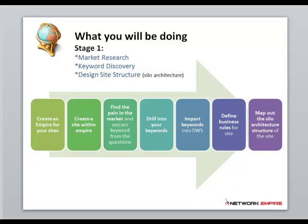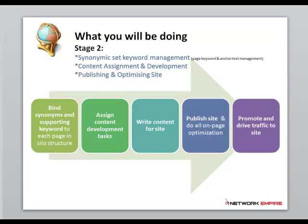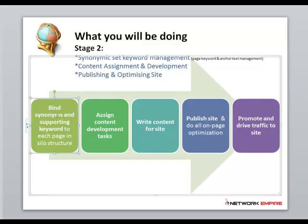Next, we're going to go to Stage 2. In Stage 2, we're going to look at our framework and per page or per keyword within our framework, we're going to assign synonyms and supporting keywords. We class this as the Synomic Set Keyword Management. In Stage 2, we're going to do our content assignment and development and then publish and optimize our site. The first step there is to bind synonyms and supporting keywords to each page in our silo structure.